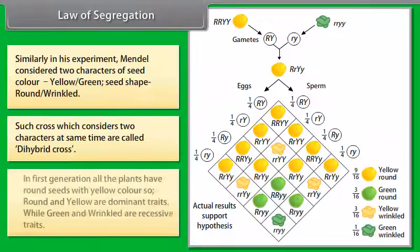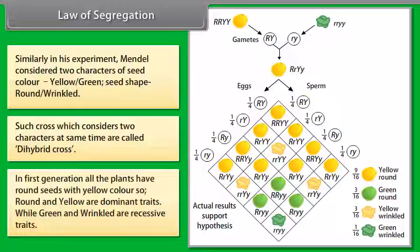In the first generation, all the plants have round seeds with yellow color. So round and yellow are dominant traits, while green and wrinkled are recessive traits.